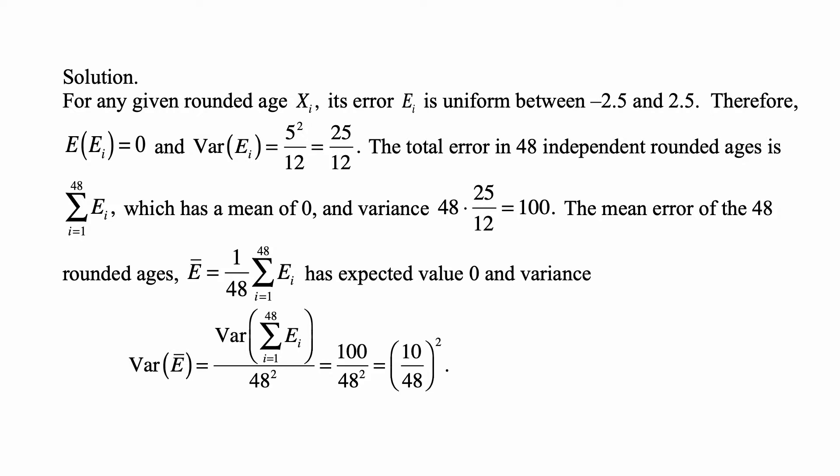The mean error of the 48 rounded ages, E-bar, is the sum of all those E_i divided by 48. It also has expected value of 0, but its variance is the variance of the sum divided by 48 squared, so it's 100 divided by 48 squared, and this is the same as (10/48) squared, because 100 equals 10 squared.